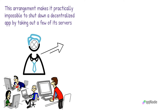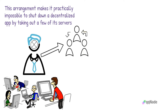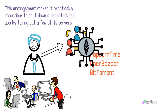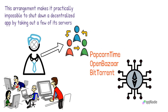There are generally two types of decentralized apps. Some run on several peer-to-peer servers but not on a blockchain. Examples of this kind of dApps are Popcorn Time, OpenBazaar, and BitTorrent. The other types of decentralized apps are built on a blockchain, mostly Ethereum.